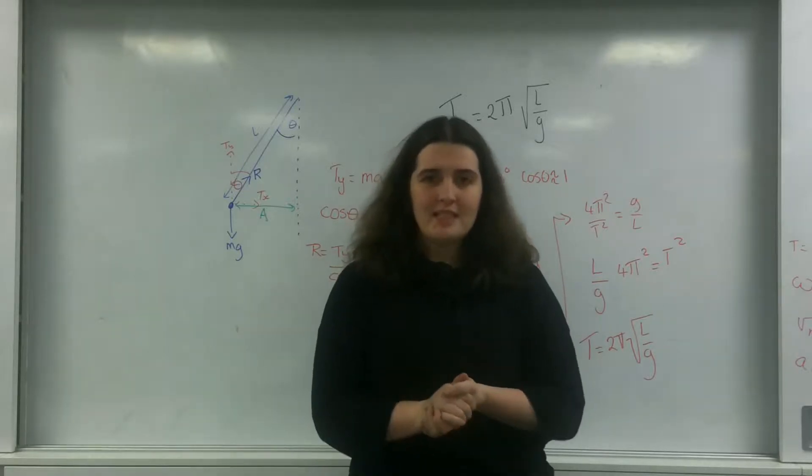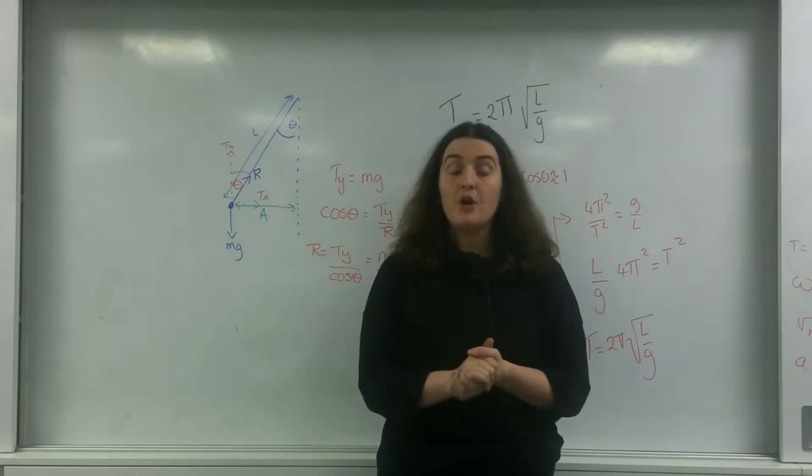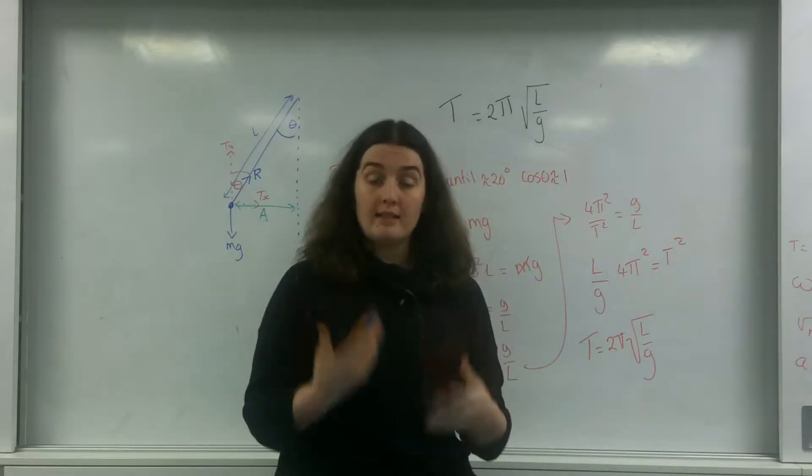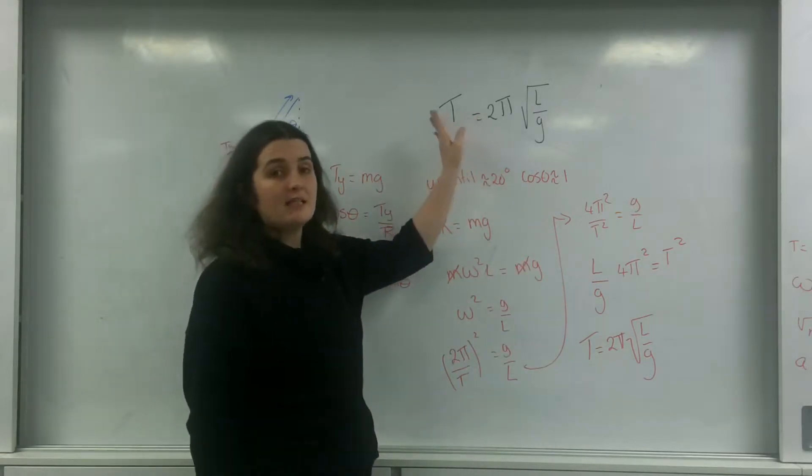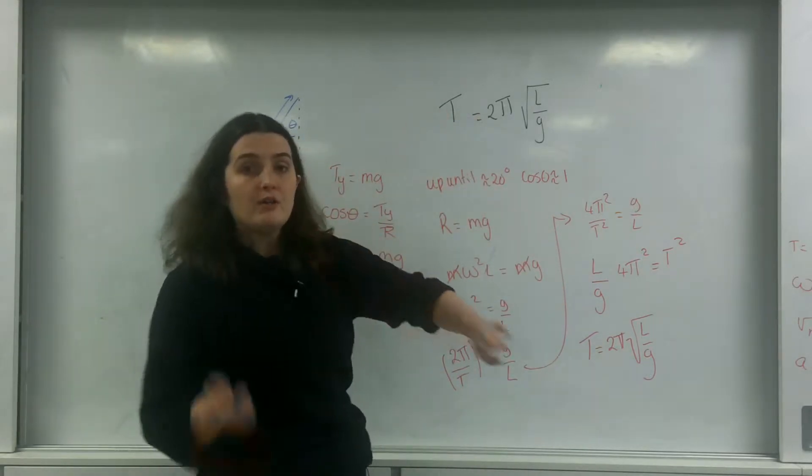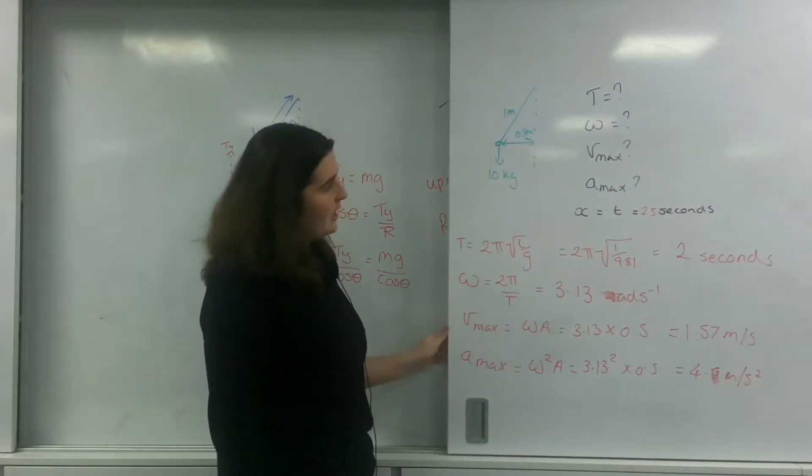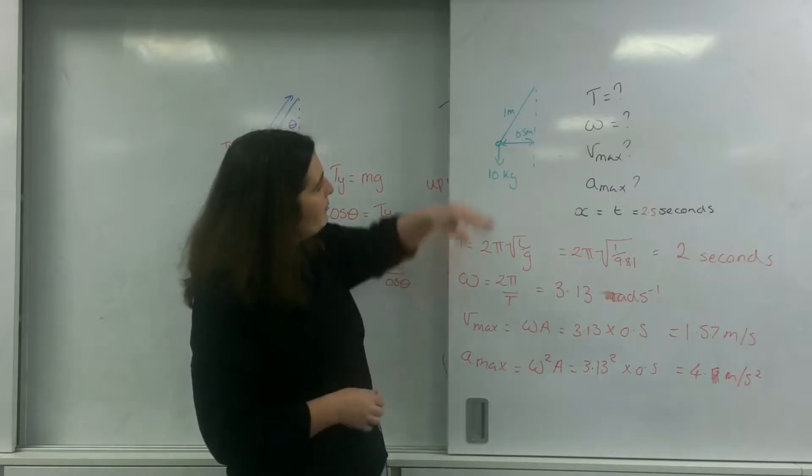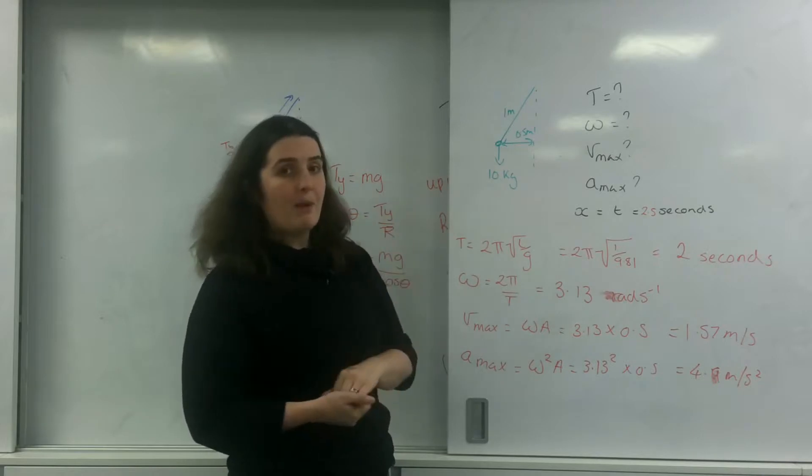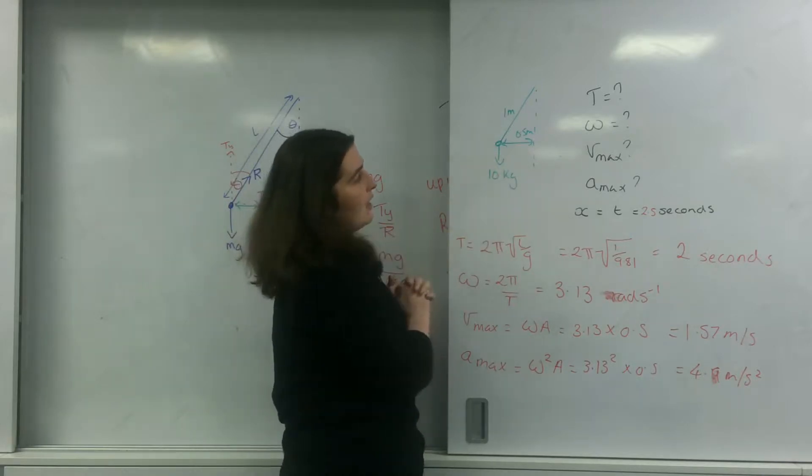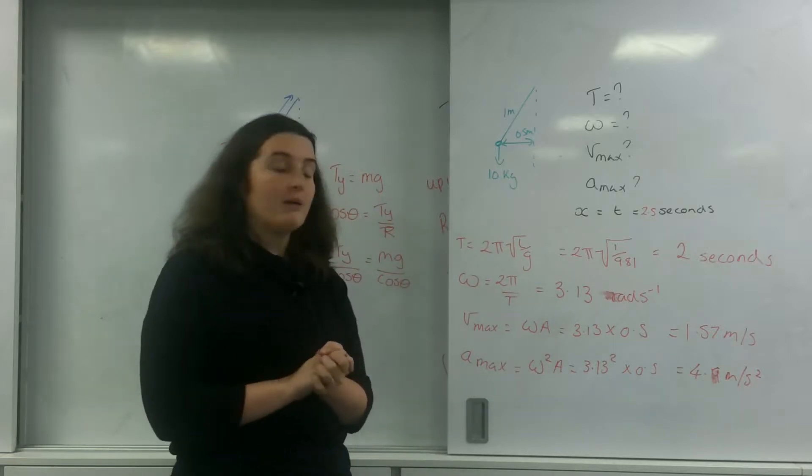Good evening and welcome to TL Physics. Today I'm going to talk about energy transforms in a pendulum system for SHM. In a previous video I talked about how we got this formula here, where the time period is 2π times the square root of length over gravitational field strength. And I did this question here where I had a 1 meter pendulum that had a 10 kilogram mass on it and the amplitude of this oscillation was 0.5 meters, and we calculated all sorts of information about it.